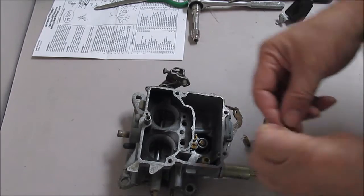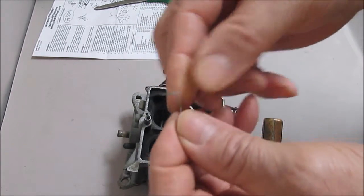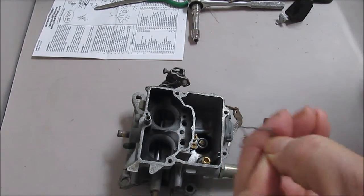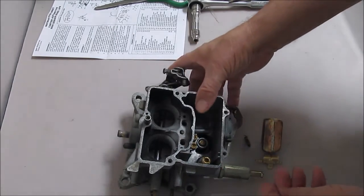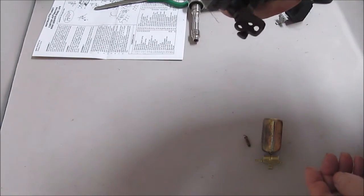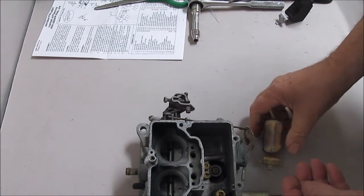I'm going to demonstrate how to put this retainer on the float pin on a Motocraft 2-barrel 2100 carburetor. Actually, this one's a 2150, but same idea.